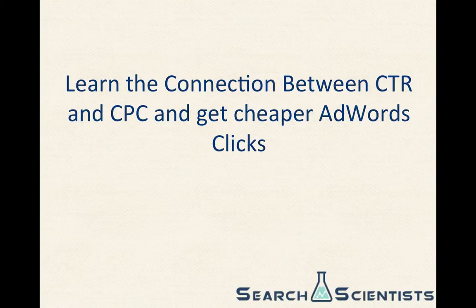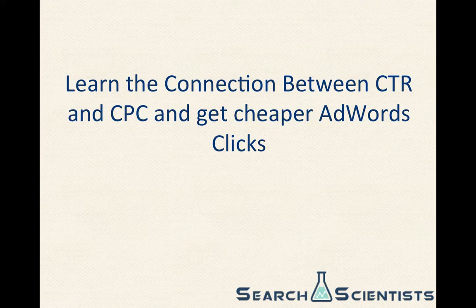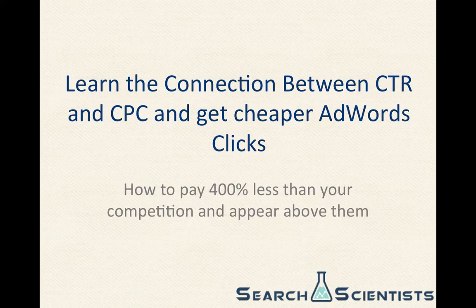Hi, it's Mike from Search Scientist and today we're going to be learning about the connection between CTR, which stands for click-through rate, and CPC, which stands for cost per click, and how to use that information to get cheaper clicks on AdWords. If I could subtitle this, I would call it how to pay 400% less than your competition and appear above them in the AdWords results.